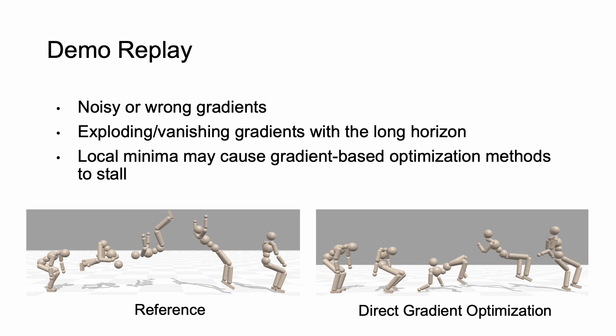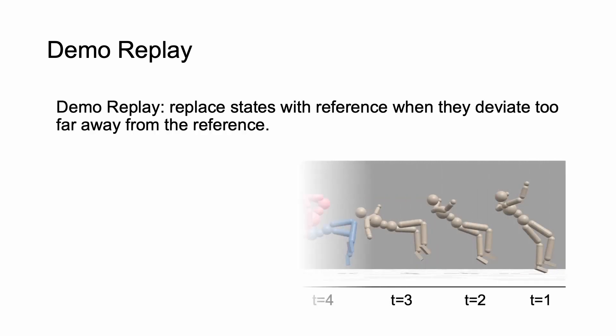Although mimicking with DPS results in a succinct learning framework, directly using analytical gradients to match the states does not yield ideal results. The reason is that DPS is known to suffer from noisy or wrong gradients. There is also an exploding or vanishing gradient issue when the optimization horizon is long. Moreover, gradient-based optimization is inherently prone to stall at local minima. Therefore, we propose to tackle the optimization problem by introducing a demo replay mechanism.